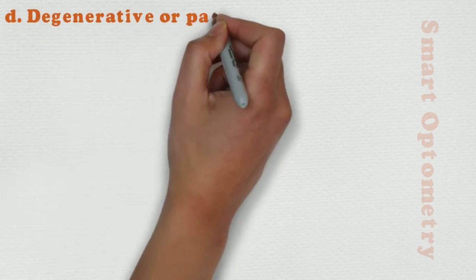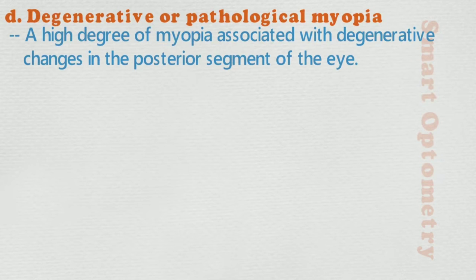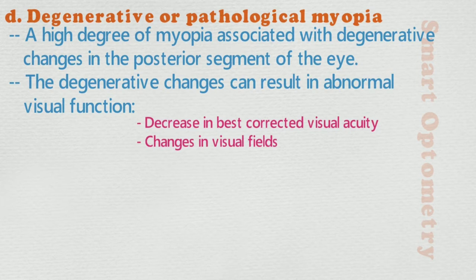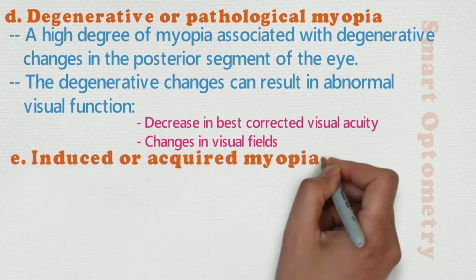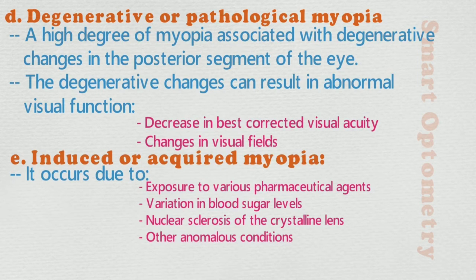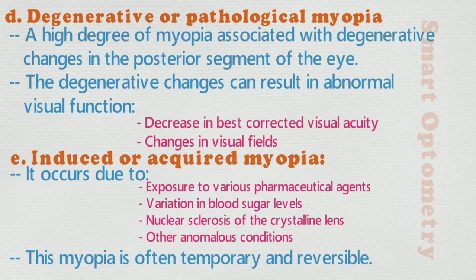D. Degenerative or pathological myopia: a high degree of myopia associated with degenerative changes in the posterior segment of the eye. The degenerative changes can result in abnormal visual function, like decreased best-corrected visual acuity and changes in visual fields. E. Induced or acquired myopia: it occurs due to exposure to various pharmaceutical agents, variation in blood sugar levels, nuclear sclerosis of the crystalline lens, or other anomalous conditions. This myopia is often temporary and reversible.